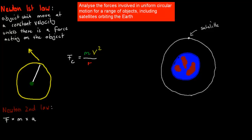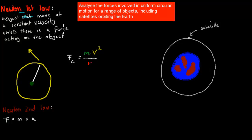Before we start, we want to go over Newton's first law, which is quite important for this concept. Newton's first law says objects move at a constant velocity unless there's a force acting on the object. For example, if there were no friction and no air resistance, a car would always move at the same velocity because there's no force acting on it. There has to be a force acting on it for it to change its direction or velocity.